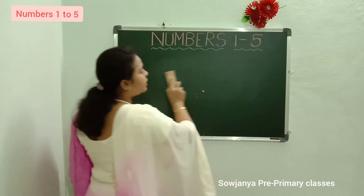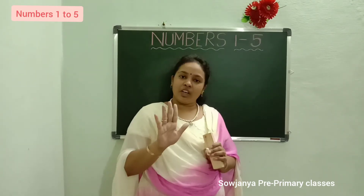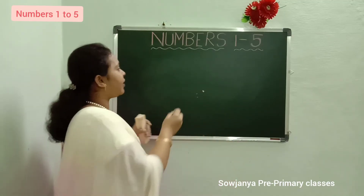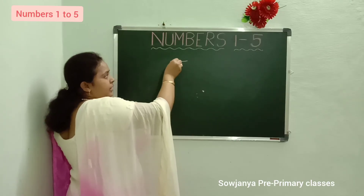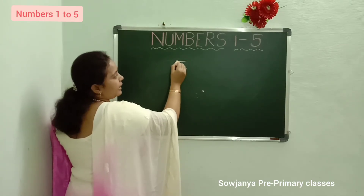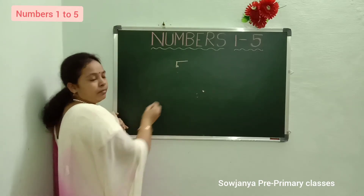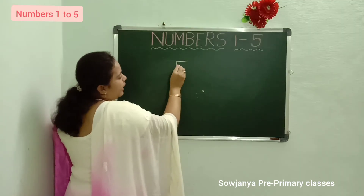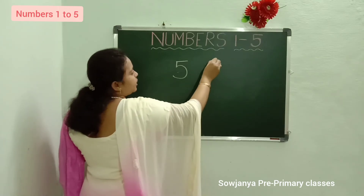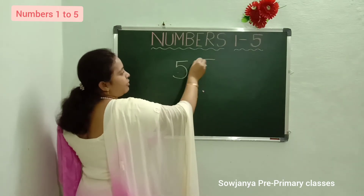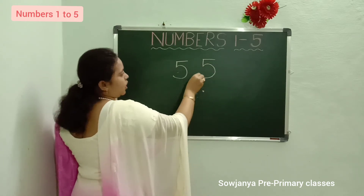4 after 5. 4 after 5. How to write 5? Write first sleeping line, from right to left, sleeping line. See, like this sleeping line. Put a small standing line. And again left curve. 5. How to write? Sleeping line. From left to right, put a small standing line. And left curve. 5.